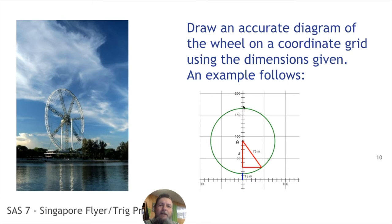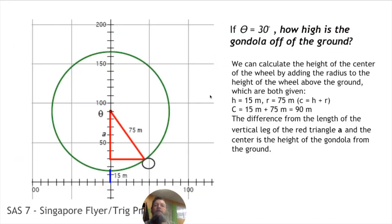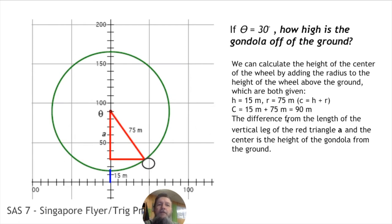The wheel spans 150 meters, between 15 meters and 165 meters. These are 10-meter ticks on the y-axis. The radius — the distance from the center to the rim — is 75 meters; two times the radius gives a diameter of 150 meters. If theta is 30 degrees, how high is the gondola off the ground? We calculate the height of the center by adding the radius to the base height: 75 plus 15 equals 90 meters.